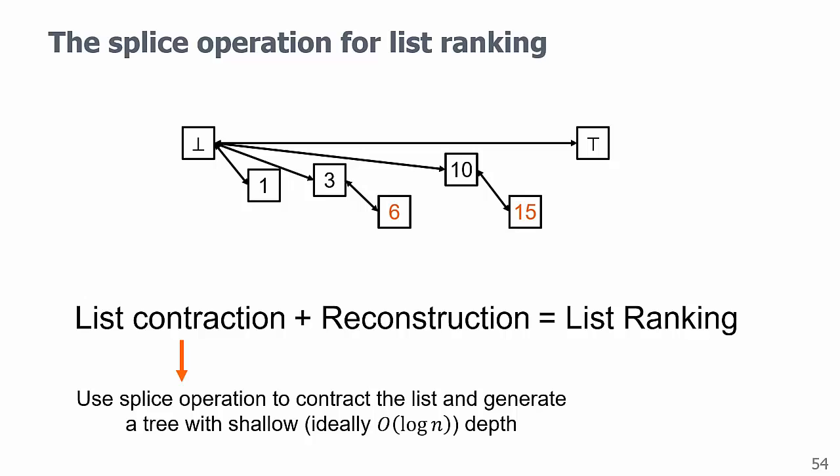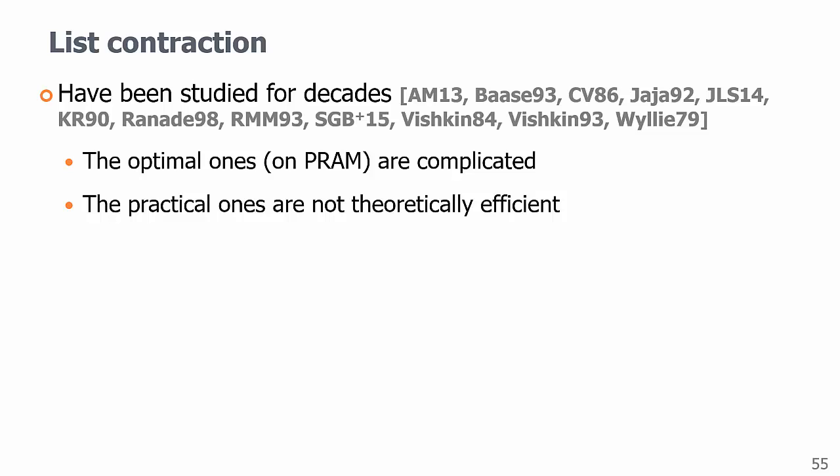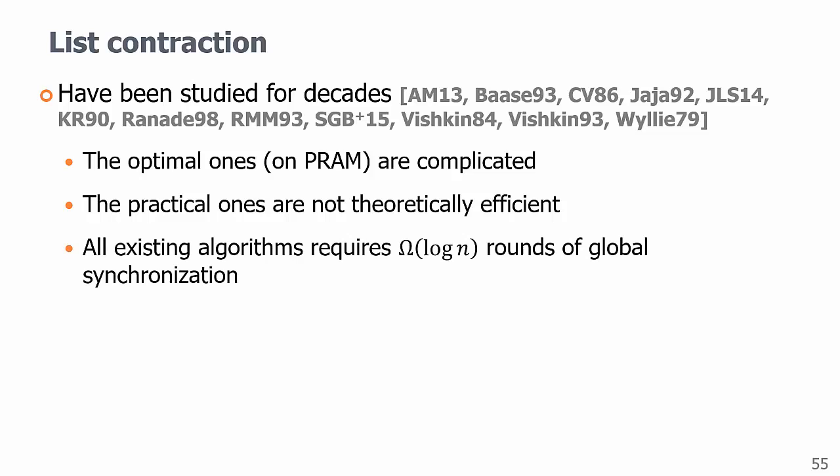The study of list ranking is mostly on the list contraction part. Given its importance, this contraction has been studied for decades. Even on a PRAM that allows free synchronization, the existing ones are either complicated or not theoretically efficient. More importantly, all existing algorithms run in rounds and require at least log n rounds of global synchronization.